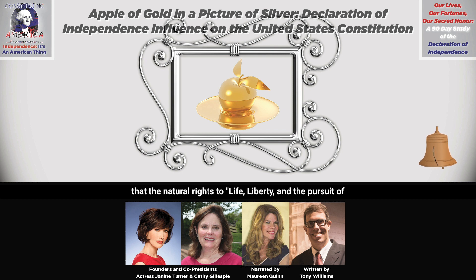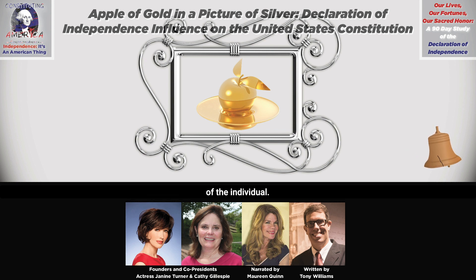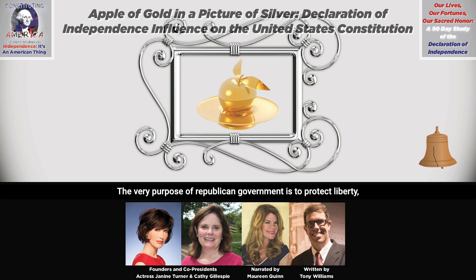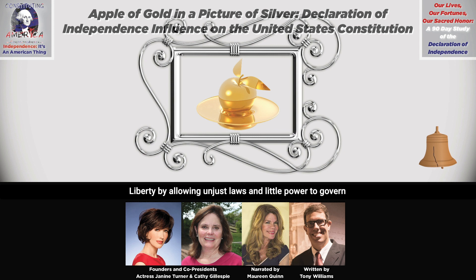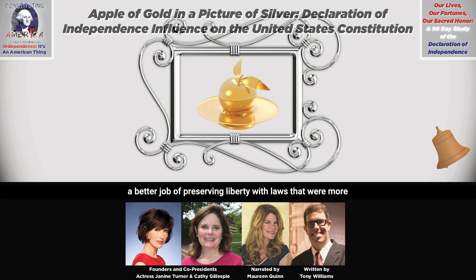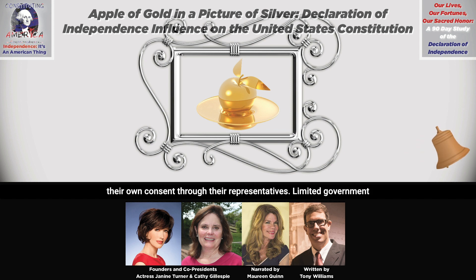The Declaration claimed that the natural rights to life, liberty, and the pursuit of happiness were self-evident. Political, economic, and religious liberty were among the fundamental and inalienable rights of the individual. The very purpose of Republican government is to protect liberty, and its powers would be limited to achieve that goal. The weakness of the Articles of Confederation actually endangered liberty by allowing unjust laws and little power to govern properly. The more robust constitutional system was intended to preserve liberty with more just laws and more vibrant national security. The founders created a free constitutional republic so that Americans might govern themselves by their own consent through their representatives.